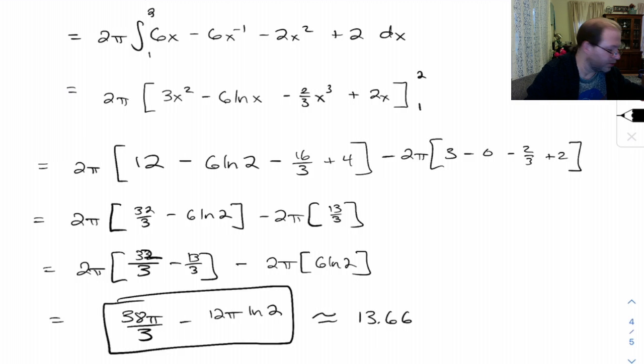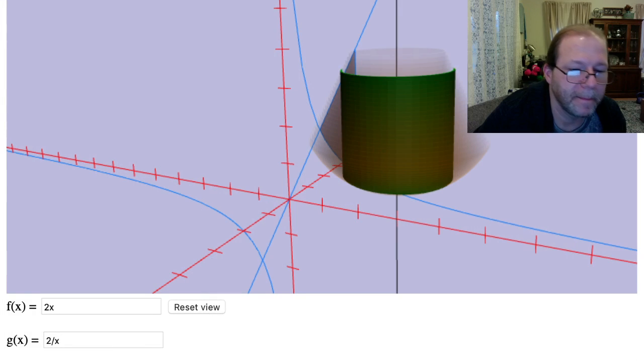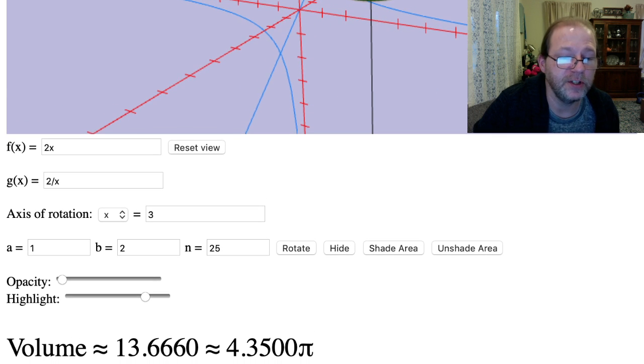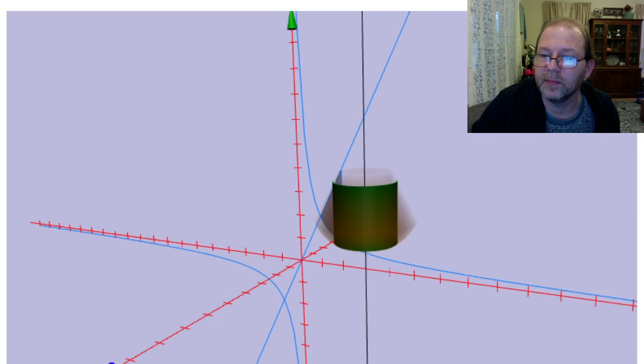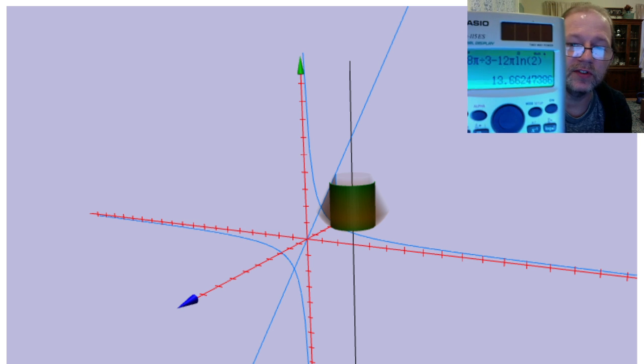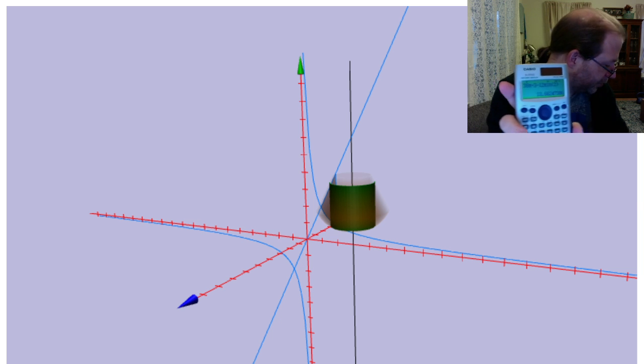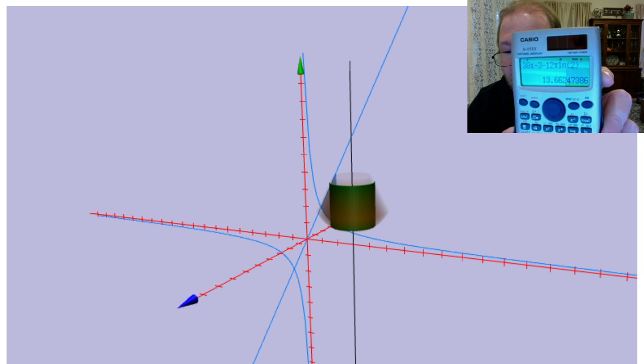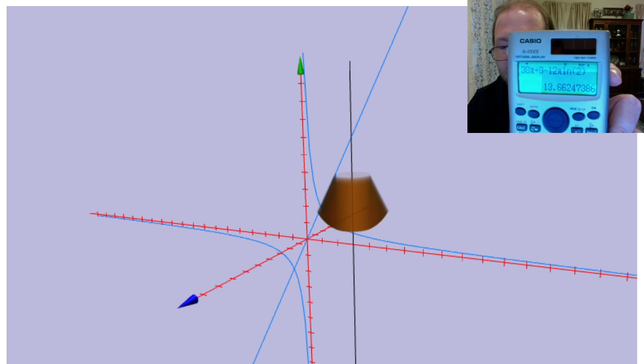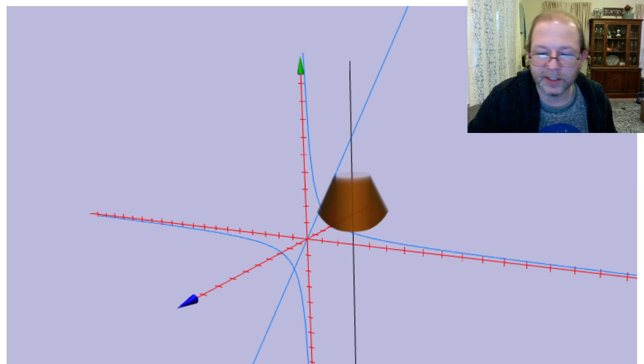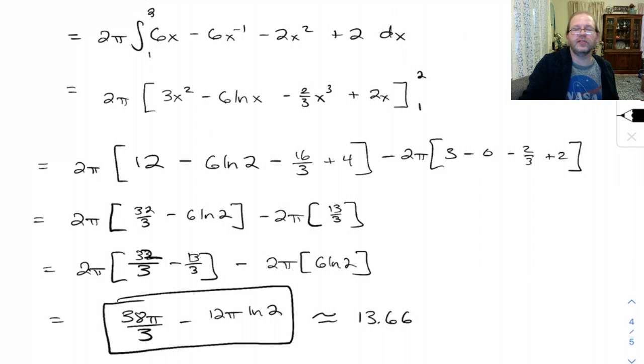Let's see how that compares to what the calculator gave us. 13.666. Nice. If we go to more decimal places, this is what I've got here. 13.6625 compared to the 13.66247. Pretty good. That's kind of an ugly calculation, but anyway, that's the volume of this thing. So I think we'll stop here.